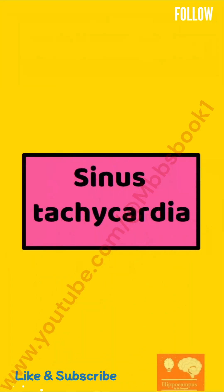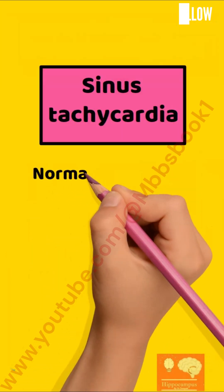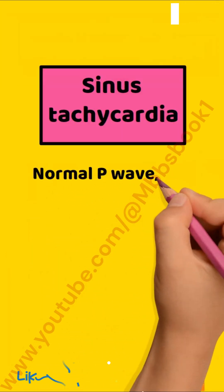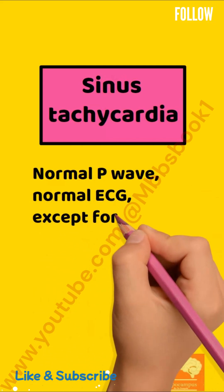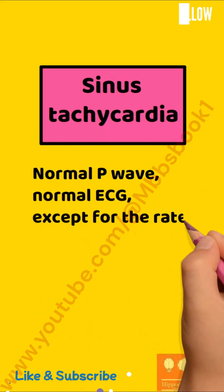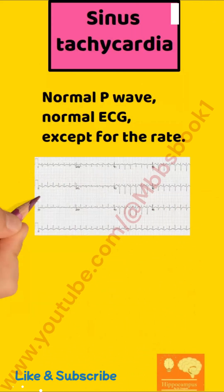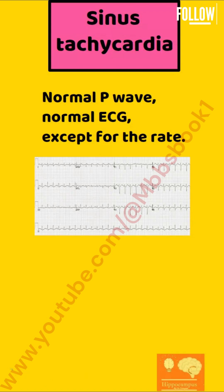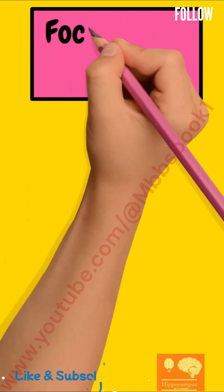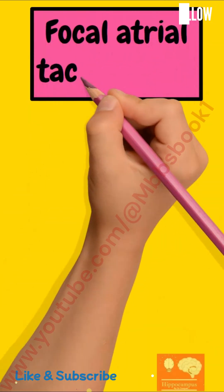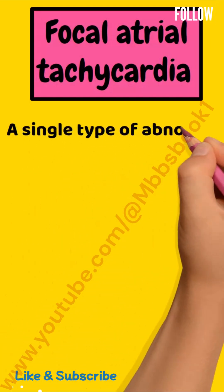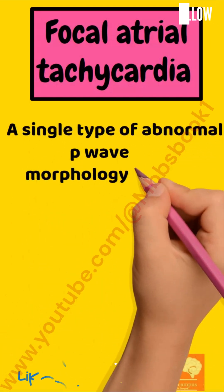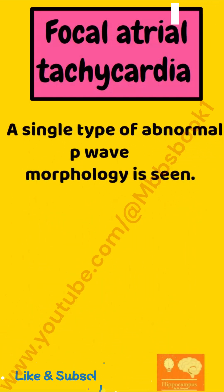First, sinus tachycardia. There is a normal P-wave and normal ECG features except for the rate. Second, focal atrial tachycardia, where a single type of abnormal P-wave morphology is seen.